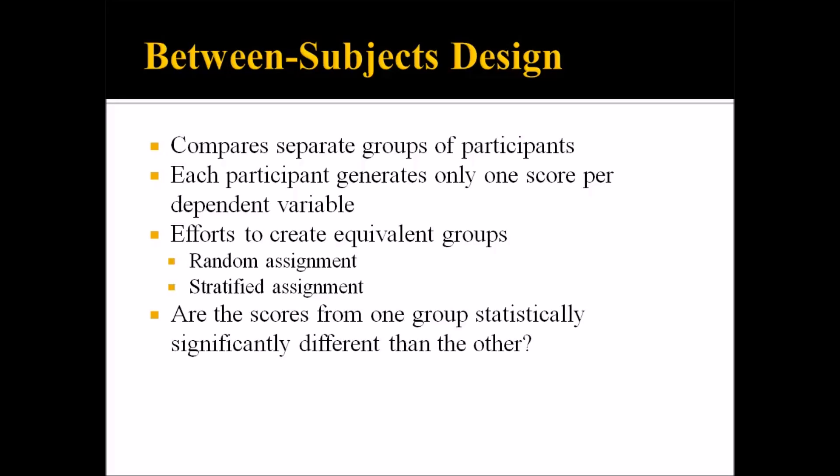We'll get started looking at some of the characteristics of between-subjects designs. Between-subjects designs compare separate groups of participants. Each participant generates only one score on the pre-test and one score on the post-test for each dependent variable. Researchers often make efforts to create roughly equivalent groups either through random assignment or stratified random assignment. One of the key questions answered by between-subjects designs is: are the scores from one group statistically significantly different than the other?